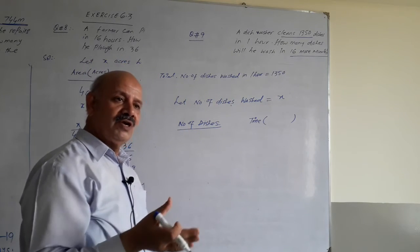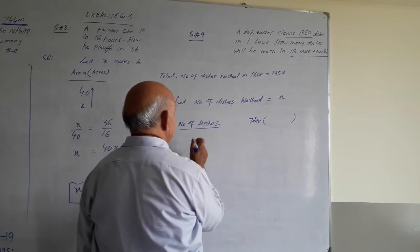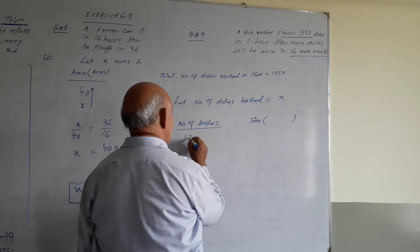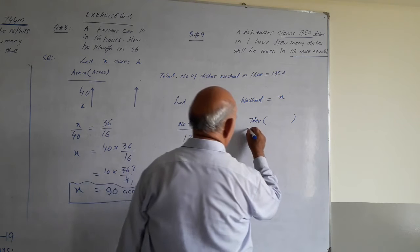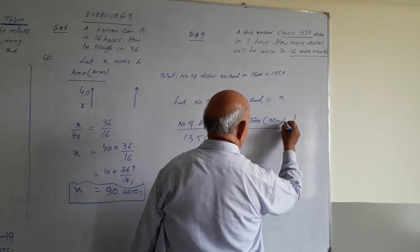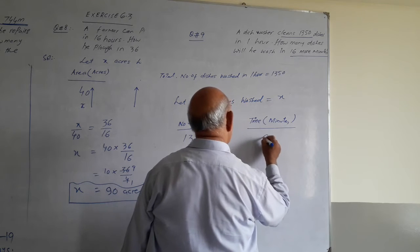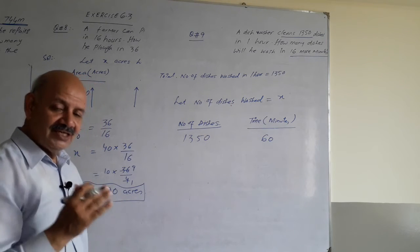We can convert to minutes. So how many dishes washed? 1350 dishes. And time, how many? Time is in minutes. 60 minutes. In 60 minutes, 1350 dishes washed.